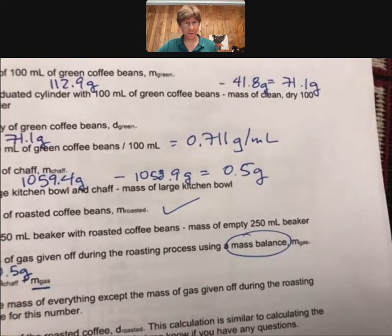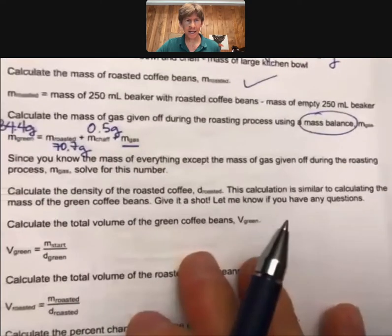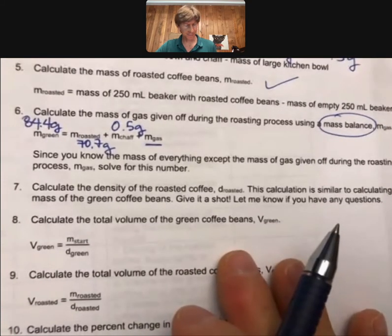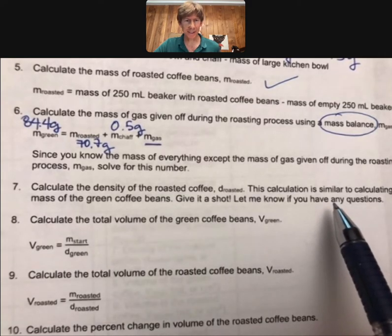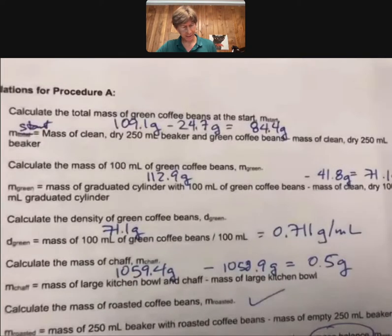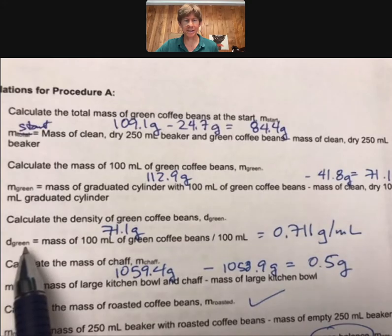Now, let's see what we got next. Calculate the density of the roasted coffee beans. I'm going to allow you to try that. That's number seven. But please, let me know if you have any questions. It's similar to the density of our green coffee beans, except for roasted.